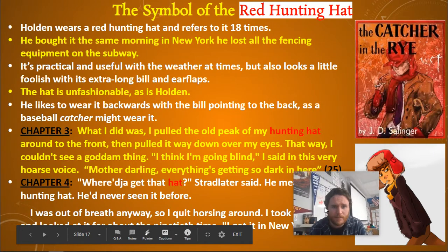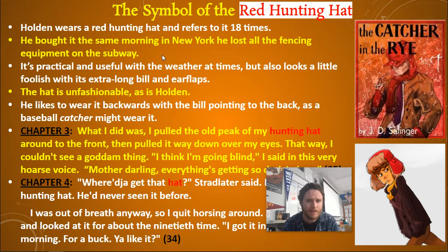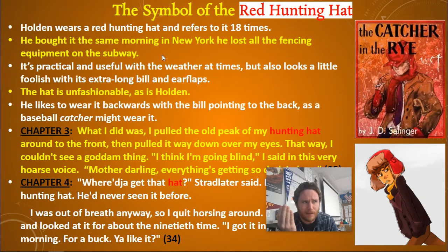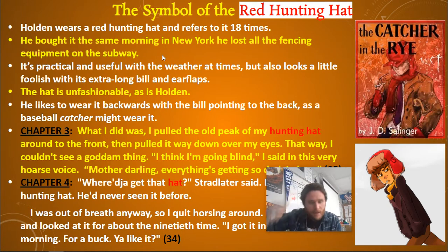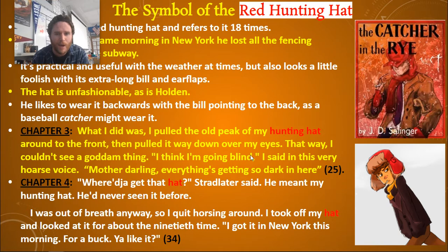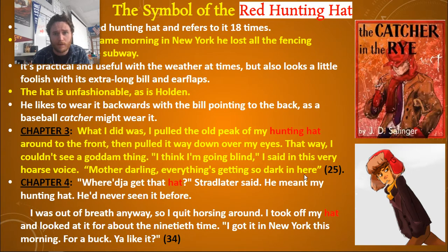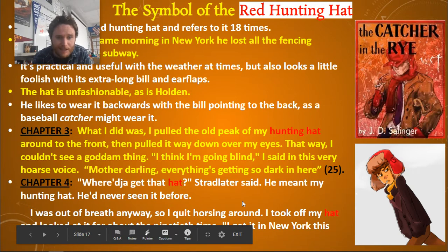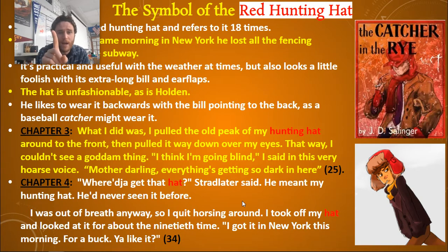Holden has this hunting hat — he refers to it 18 times in the book. He bought it the same morning in New York that he lost all the fencing equipment on the subway. It's practical and useful, shielding him from the cold and the rain, but the hat also looks a little foolish with its extra-long bill and its ear flaps. The hat is unfashionable, as is Holden — does he fit in with society? He likes to wear it backwards with the bill pointing to the back, as a baseball catcher might wear it. In chapter three he says: 'I pulled the peak of my hunting hat around to the front and pulled it way down over my eyes. That way I couldn't see a gosh damn thing. I think I'm going blind,' he says in a hoarse voice to Ackley, 'mother darling, everything's getting so dark in here.' It looks like a joke, but is there symbolism in this darkness?